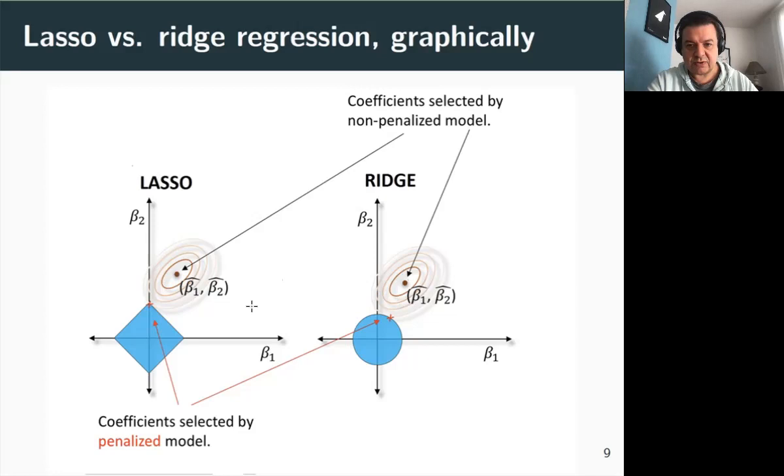Now the constraint region for ridge regression is the disk here. Remember the L2 norm? Both methods find the first point where the elliptical contour hits the constraint region, the blue region here. And these intersections are here, the two red crosses. If we focus on the ridge regression on the right, the solution is here for beta one and beta two.